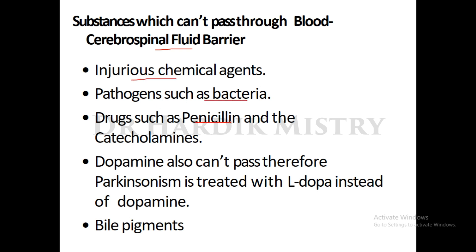Drugs such as penicillin and catecholamines like dopamine also cannot pass through the blood-CSF barrier. Therefore, Parkinsonism is treated with L-DOPA instead of dopamine, because L-DOPA can cross the blood-CSF barrier, enter the brain, and reach the specific area where it is converted to dopamine. Bile pigments also cannot pass through the blood-CSF barrier.